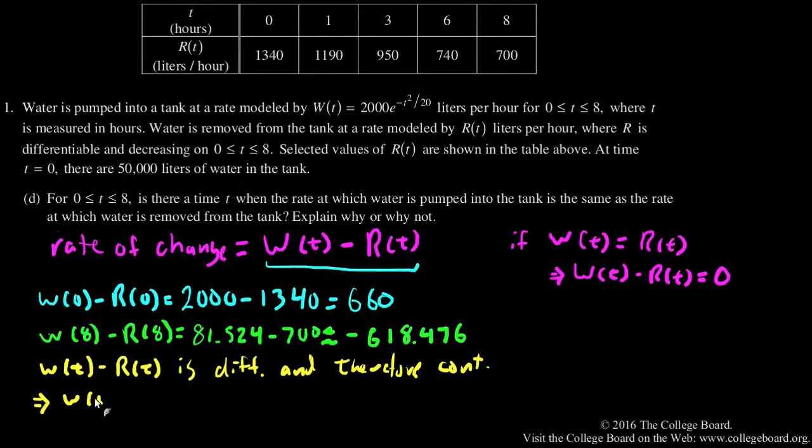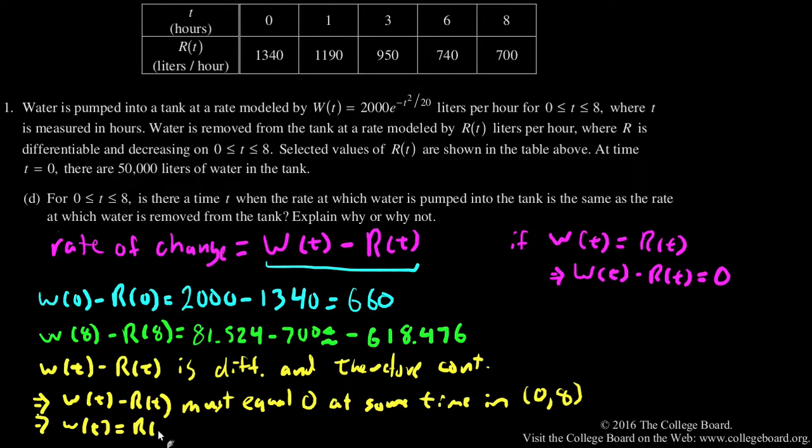So therefore, w of t minus r of t must equal 0 at some time in the interval 0, 8. And finally, if that equals 0, then w of t will equal r of t at that time.